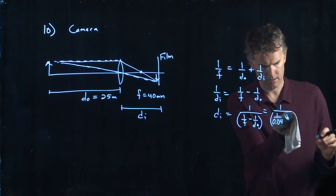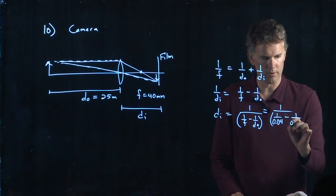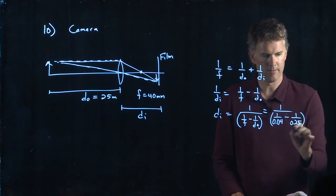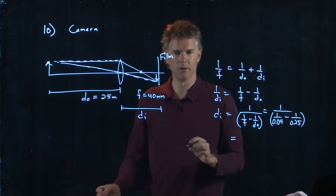That's a minus. So we have minus 1 over 0.25. And if you punch in those numbers, tell me what you get for DI.